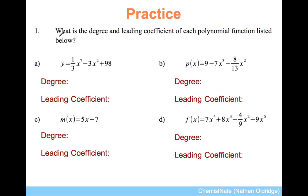So, I am going to ask you, what is the degree and leading coefficient of each of these polynomial functions? Let's start with this. The degree is the highest exponent we see on x. I see x to the 7, x to the 2, and x to the 0. That means the degree is 7.